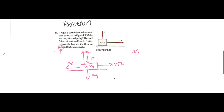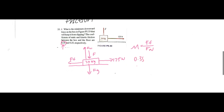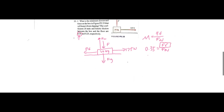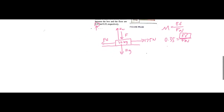We know that mu, which in our case is 0.35, is equivalent to the frictional force, Ff, over Fn. So mu is 0.35 and that's equivalent to Ff over Fn. Now how can we find Ff? Because if we find one of these variables we can find Fn, which will be immensely helpful because then we can calculate everything in the y direction.